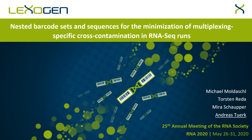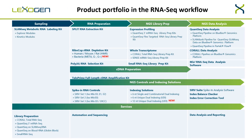Hello, my name is Andreas Türk from Lexogen. I am going to talk about nested barcode sets and sequences for the minimization of multiplexing-specific cross-contamination in RNA-seq runs. Lexogen has products in various areas of RNA-seq: sampling, RNA preparation, NGS library prep, and NGS data analysis. The barcodes I'm going to talk about today are part of this portfolio — they are the 12 nucleotide unique dual indexing barcodes.